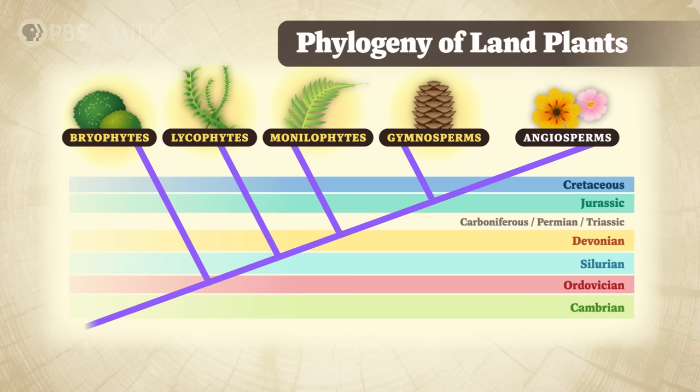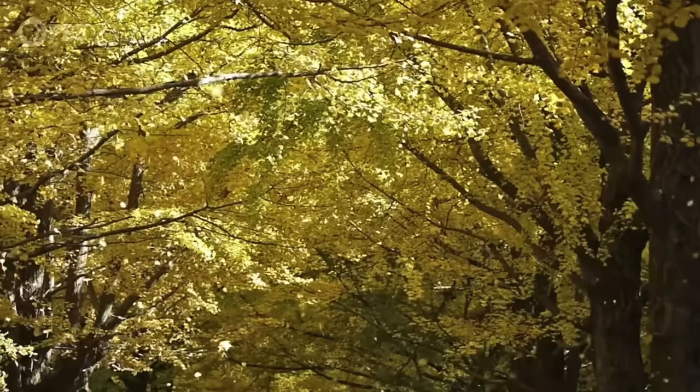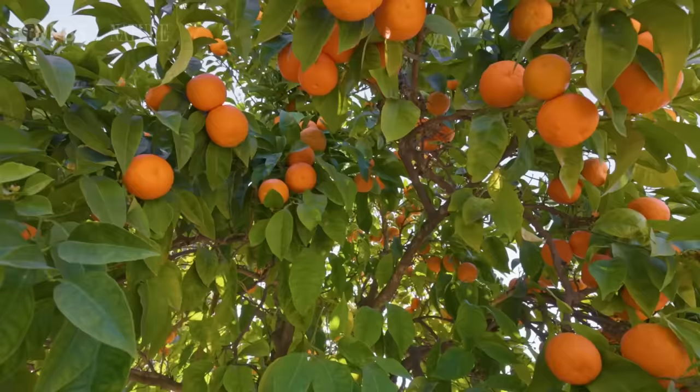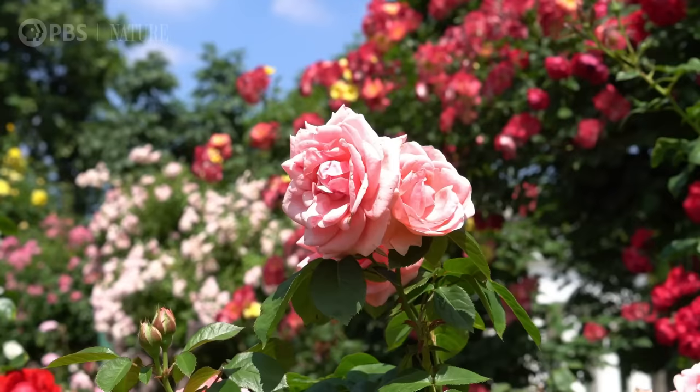And then angiosperms, which bear flowers and fruits, came up with even more innovations for protecting and spreading those seeds. Because of their evolutionary advantages, these two types of plants dominate Earth's ecosystems, shaping how virtually every other organism lives and interacts. And they are by far the most common types of plants you're likely to interact with in your daily life.